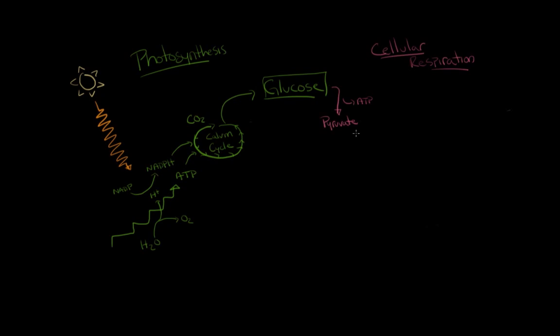Pyruvate is then broken down into acetyl-CoA, and then acetyl-CoA then enters the TCA cycle. And TCA stands for tricarboxylic acid. And this cycle is also known by a couple other names, like the Krebs cycle and the citric acid cycle.